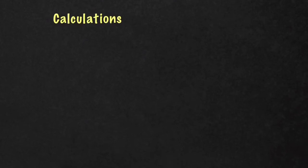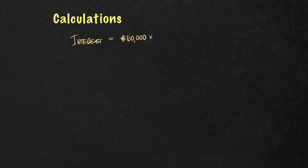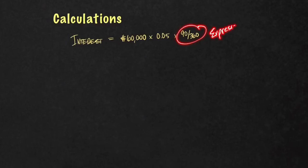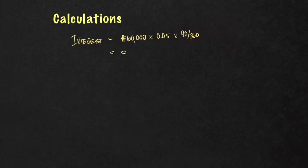So let's calculate the interest for this discounted loan. Interest equals the principal, which is $60,000, multiplied by 5% (or 0.05), times 90 days. Since that's in days, you have to express it in years by putting those days over 360 — because the financial world uses 360 days for a more rounded number. That gives us $750 of interest.